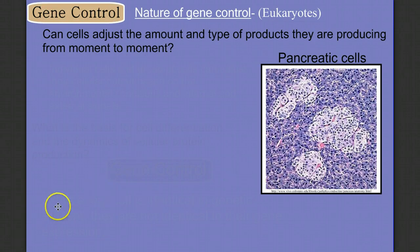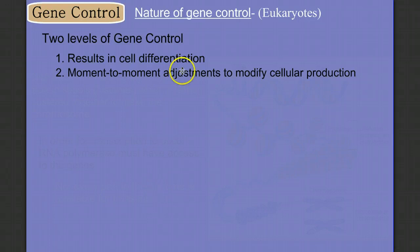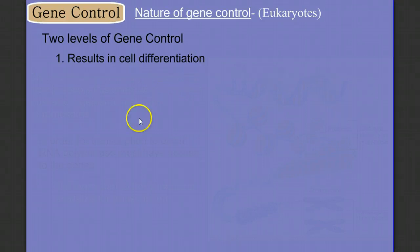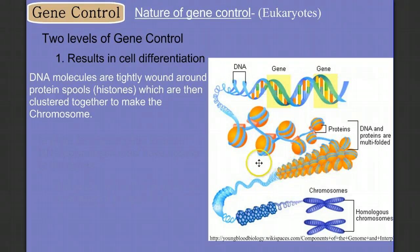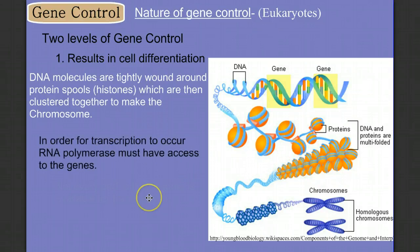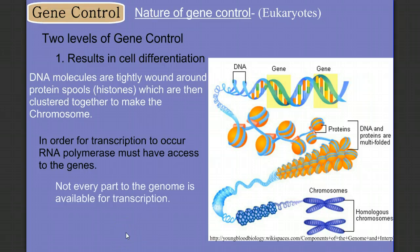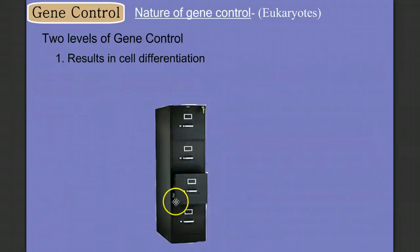So we have two levels of gene control: one that results in cells becoming very different types, and one focused on moment-to-moment adjustments. Let's focus on cell differentiation first. Recall from our discussion on the structure of DNA that the DNA molecule is concentrated and wrapped around proteins called histones into larger structures called chromosomes. When tightly wound, it can be difficult for RNA polymerase to get to the gene for transcription to occur — some genes may not even be available for transcription.